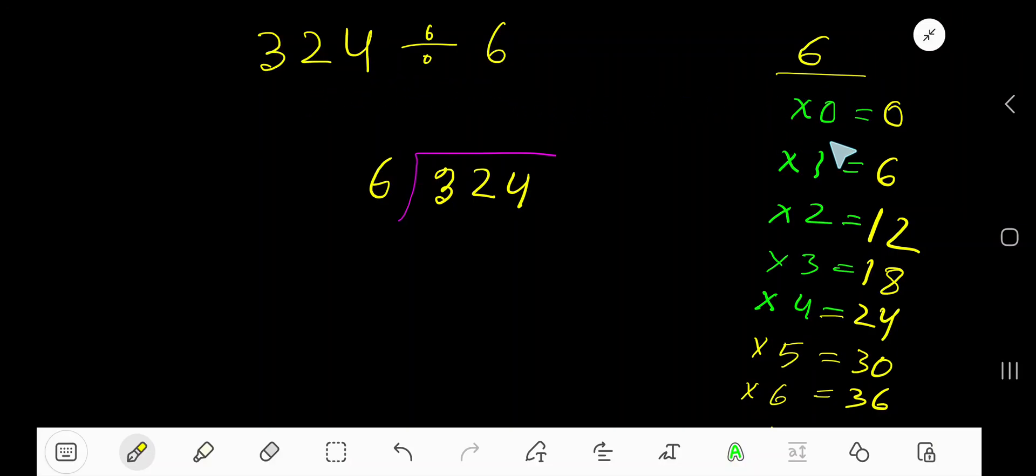324 divided by 6. 6 times 0 is 0, 6 times 1 is 6, 6 times 2 is 12, 6 times 3 is 18, 6 times 4 is 24, 6 times 5 is 30, 6 times 6 is 36. To find out the multiplication table of 6, just add 6 with the previous step: 0 plus 6 is 6, 6 plus 6 is 12, 12 plus 6 is 18.